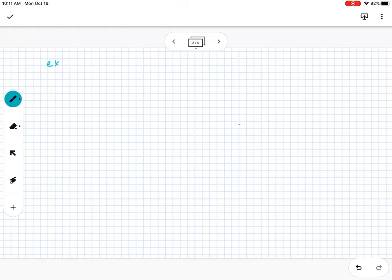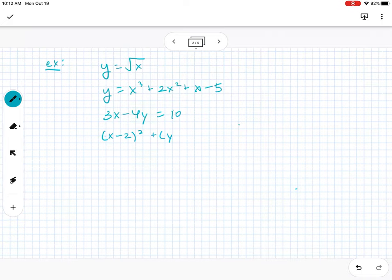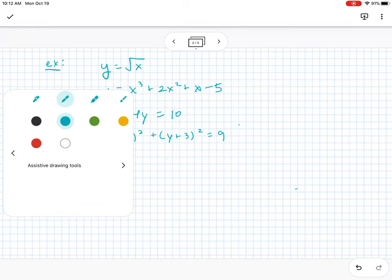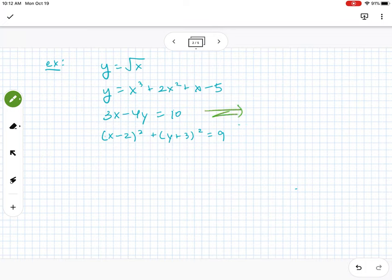Before I actually answer this question, let me give you guys a couple of examples. So if I say y equals square root of x, or y equals x to the third plus 2x squared plus x minus 5, or 3x minus 4y equals 10, or x minus 2 squared plus y plus 3 squared equals 9. Out of these, which one would we say is linear?